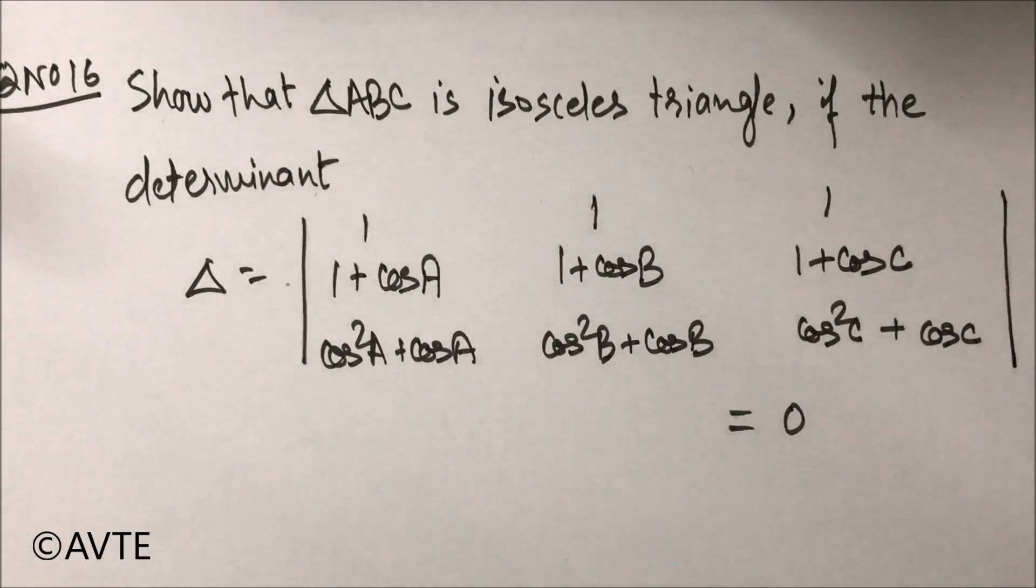The question says, show that triangle ABC is isosceles triangle if the given determinant is zero. That is, the value of the determinant is zero. So here they're using delta as the determinant and delta is also used as the symbol of the triangle ABC. So you should not be confused.